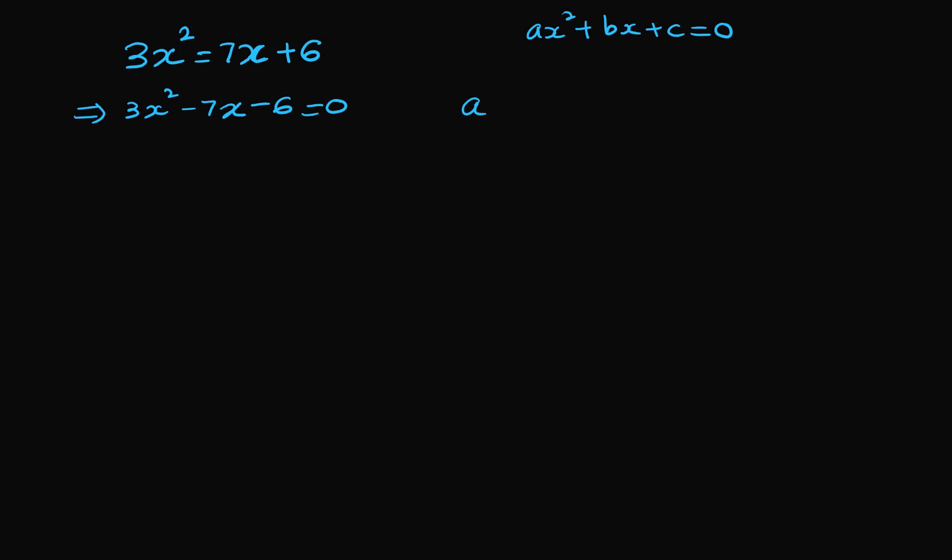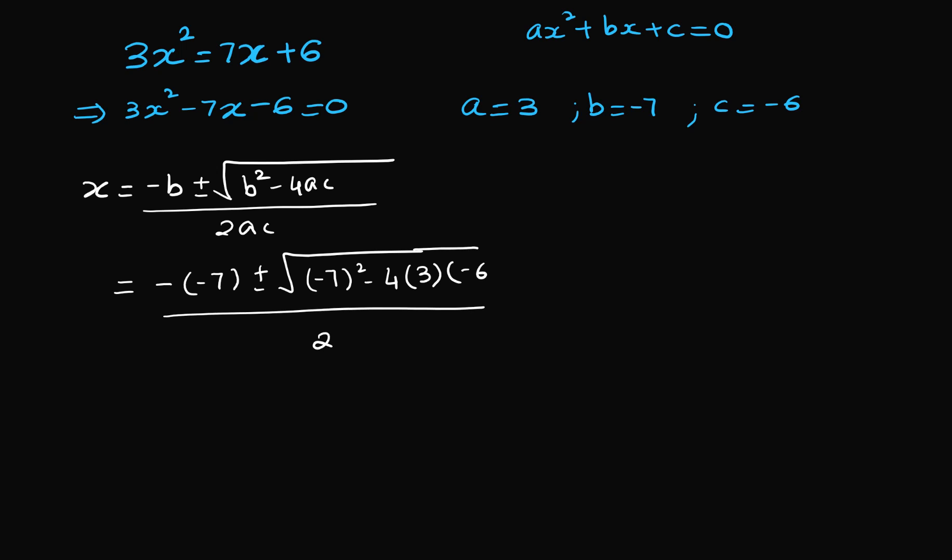Once again, we identify our a, a is 3, our b is minus 7, and c is equal to minus 6. So, now we make use of the quadratic formula which is x equals minus b plus or minus square root of b square minus 4ac divided by 2a. And if you substitute a, b and c, you get minus b plus or minus square root of b square. So, that means minus 7 square minus 4 into a into c. So, 4 into 3 into minus 6, and the whole thing divided by 2 into a. So, that is 2 into 3.